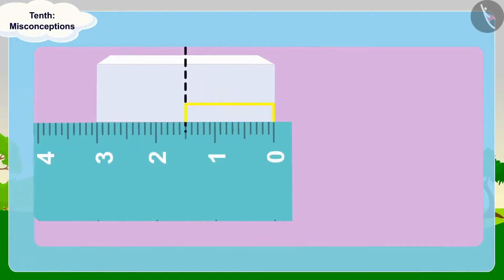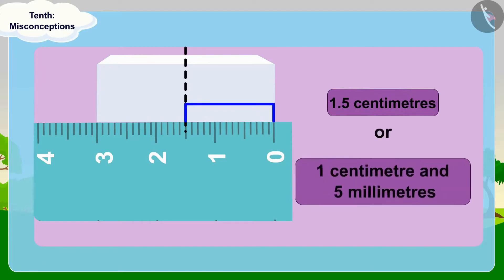Half of the eraser is 5 tenths more than a centimeter. So we can write it as 1.5 using decimals. And we also know that 1 tenth of a centimeter is equal to 1 millimeter. So 5 tenths of a centimeter will be equal to 5 millimeters.